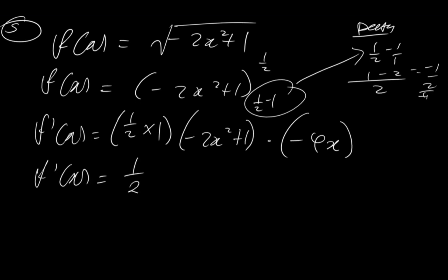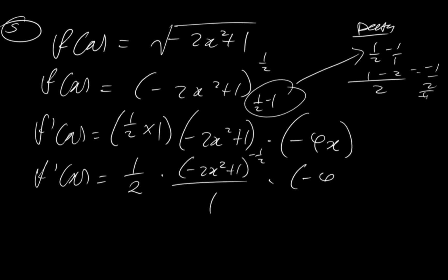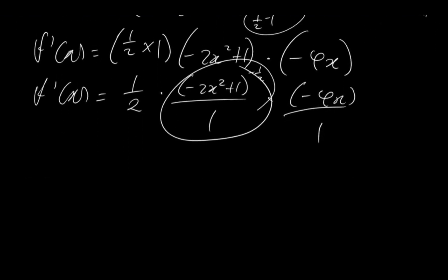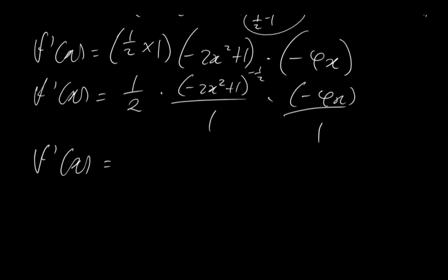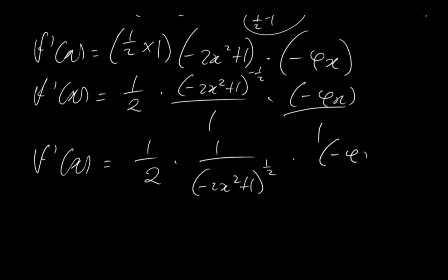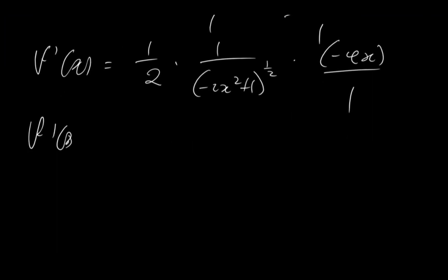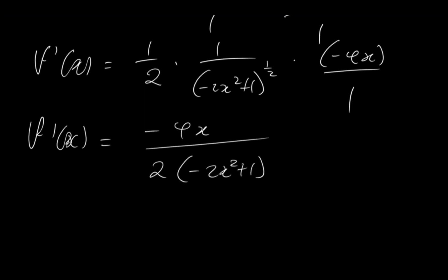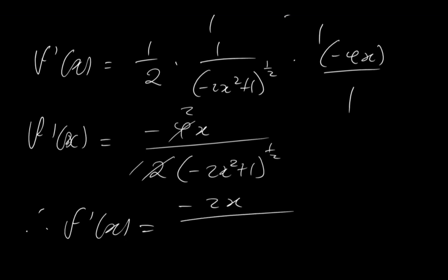So we have f prime of x being equal to 1 over 2 times (minus 2x squared plus 1) to the minus 1 over 2, times minus 4x. To make this a positive index, we reciprocate it. So f prime of x is equal to 1 over 2 times 1 over (minus 2x squared plus 1) to the positive 1 over 2, times minus 4x. This gives f prime of x equal to minus 4x over 2 times (minus 2x squared plus 1) to the 1 over 2. Reducing, 4 over 2 gives 2, therefore f prime of x is equal to minus 2x over the radical of (minus 2x squared plus 1). And this is the final answer.